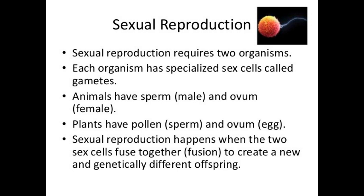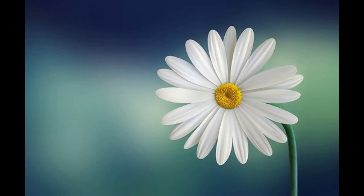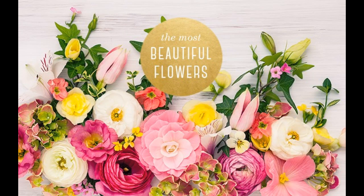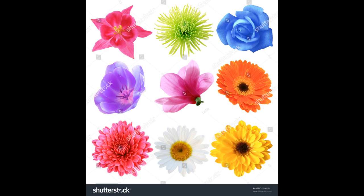In plants, sexual reproduction also takes place. The organ of the plant which helps in the process of sexual reproduction is the flower. Flowers are the most beautiful parts of the plant. For different plants, different kinds of flowers are present — their shape, size, and structure are all different from one another.